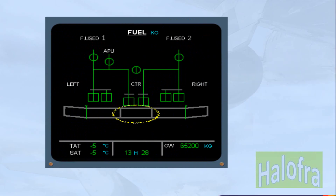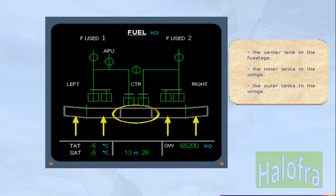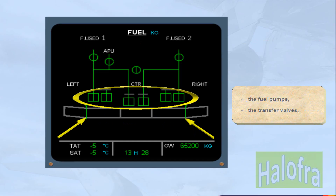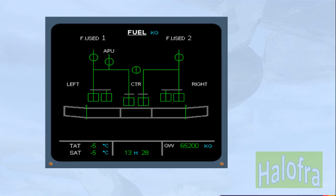On the ECAM fuel page you can identify: the centre tank in the fuselage, the inner tanks in the wings, the outer tanks in the wings, the fuel pumps, the transfer valves, the engine low pressure valves, the cross feed valve, and the APU low pressure valve.